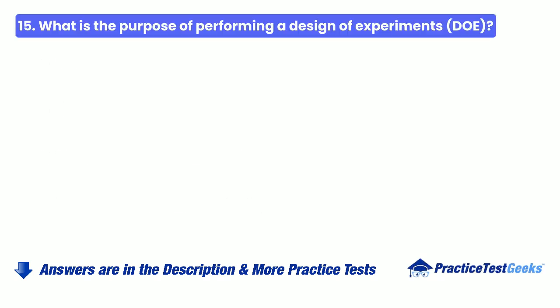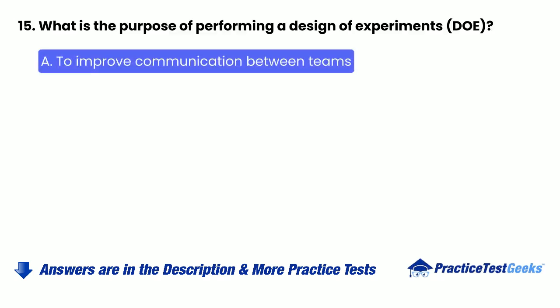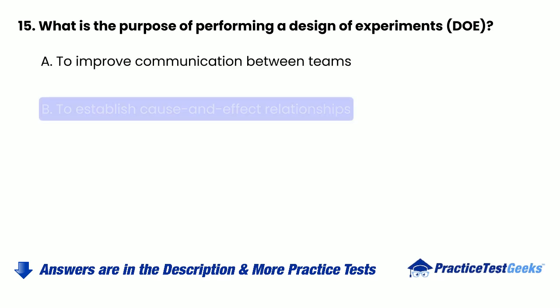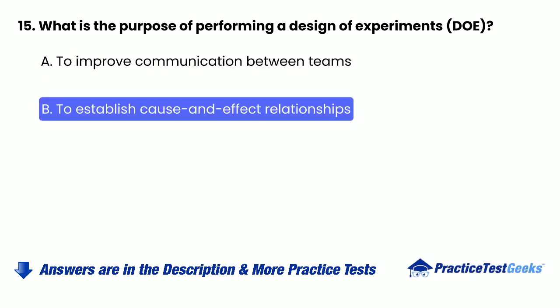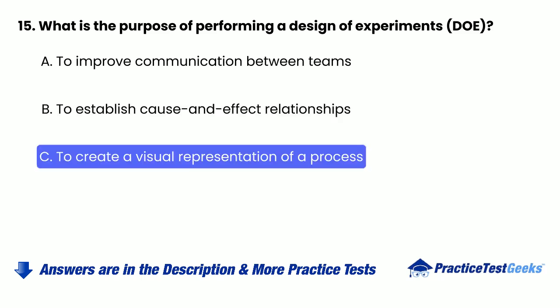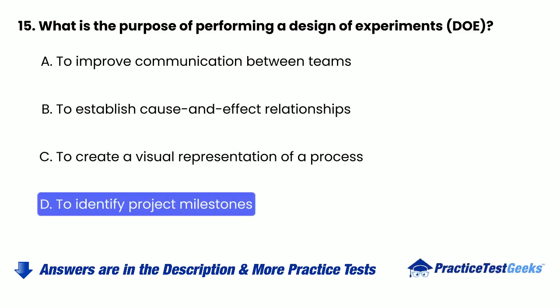15. What is the purpose of performing a design of experiments (DOE)? a. To improve communication between teams. b. To establish cause-and-effect relationships. c. To create a visual representation of a process. d. To identify project milestones.